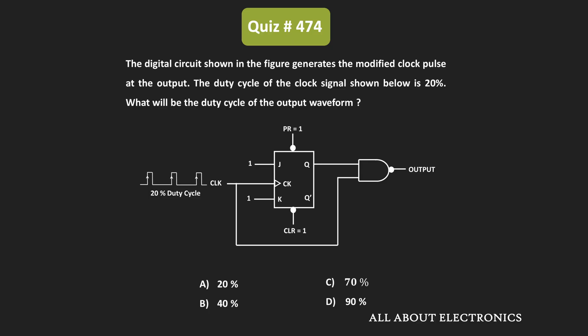Hey friends, welcome to the YouTube channel all about electronics. In this question, we have been given a digital circuit that generates the modified clock pulse at the output. The duty cycle of the input clock pulse is 20% and we have been asked to find the duty cycle of the output waveform.